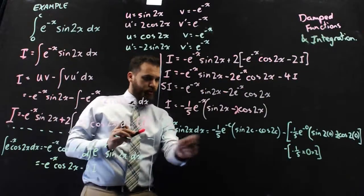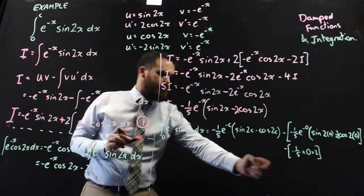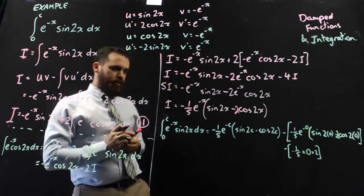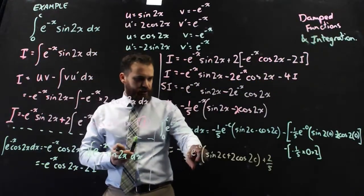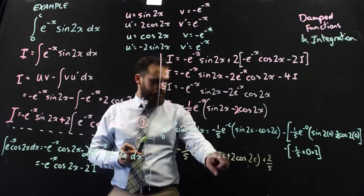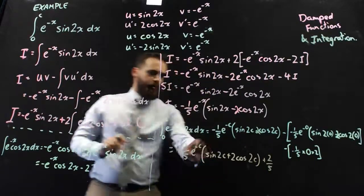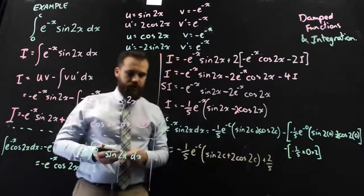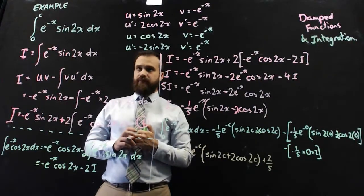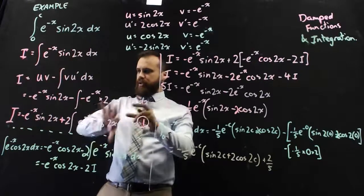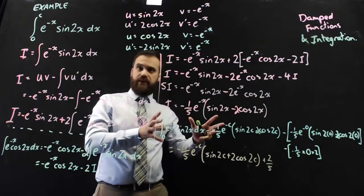From there I can rewrite the expression in terms of c and add on the constant, and we are done. The final answer is negative one fifth e to the negative c times the quantity sine 2c plus 2 cos 2c, plus 2 fifths. As you can see, a lot of work to get there. There is a small shortcut somewhere in here which we'll talk about, but that's where it's at.